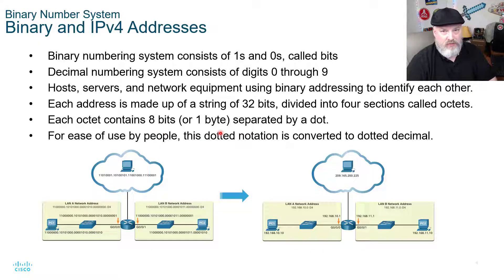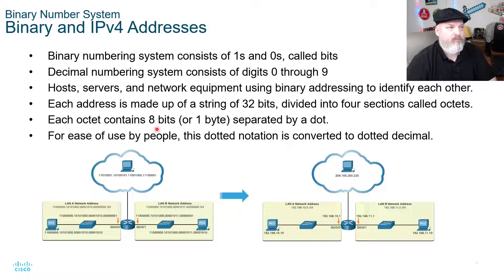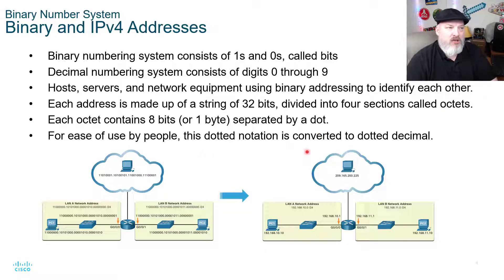Eight bits is a byte. Each octet contains eight bits — one byte — and it's also separated by a dot. For ease of use, people use the dotted notation. It's converted to a dotted decimal system.